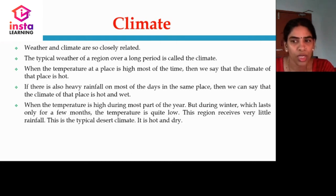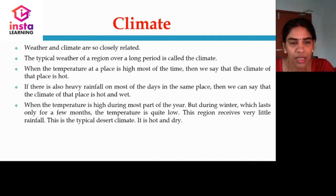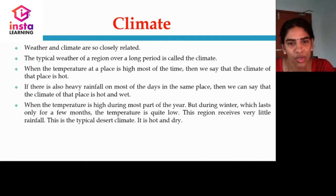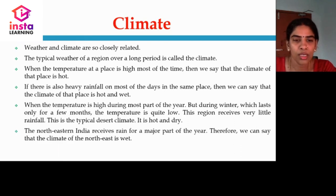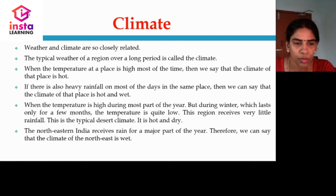When the temperature is high during most part of the year but winter lasts only for a few months and the temperature is quite low, this region will receive very little rainfall. This is the typical climate in desert conditions. That's why deserts are very hot and dry. The north eastern India receives rain for a major part of the year, therefore we can say that the climate of the north east is wet.